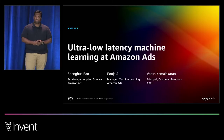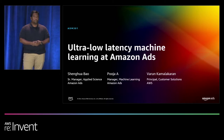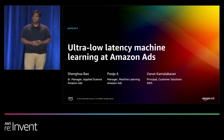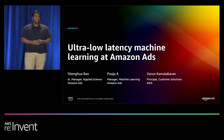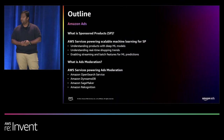I'm Varun Kamlakaran. I'm a Principal Customer Solutions Manager at AWS, and this is ADM 301, Ultra Low Latency Machine Learning, presented by Amazon Ads. Joining me on stage will be Shengwa Bao, Senior Manager for Applied Sciences in the Sponsored Products team within Amazon Ads, and also Puja, Manager for Machine Learning in the Ads Moderation team within Amazon.